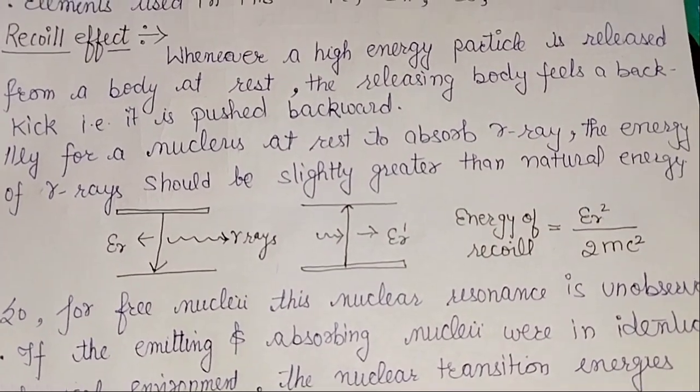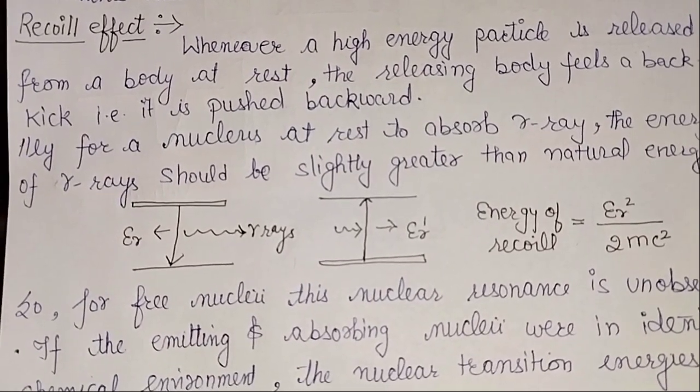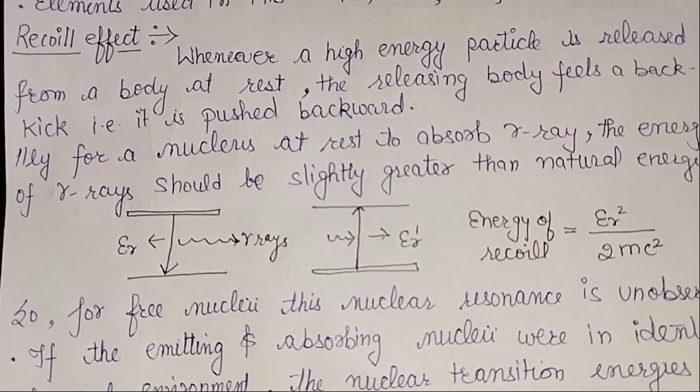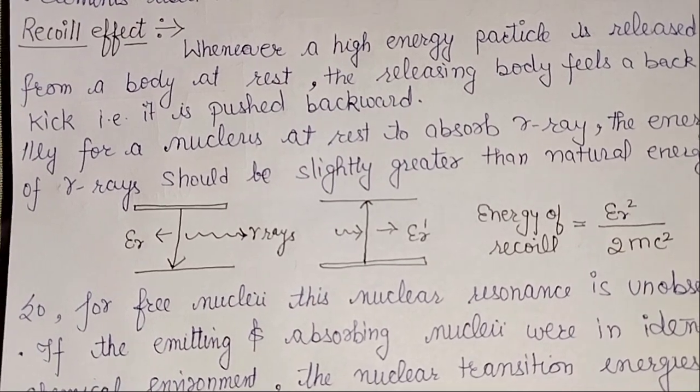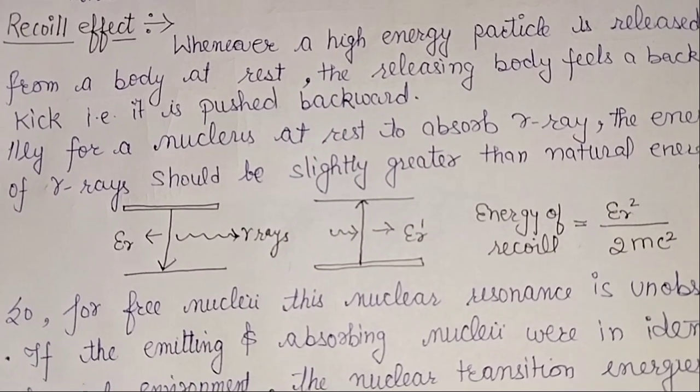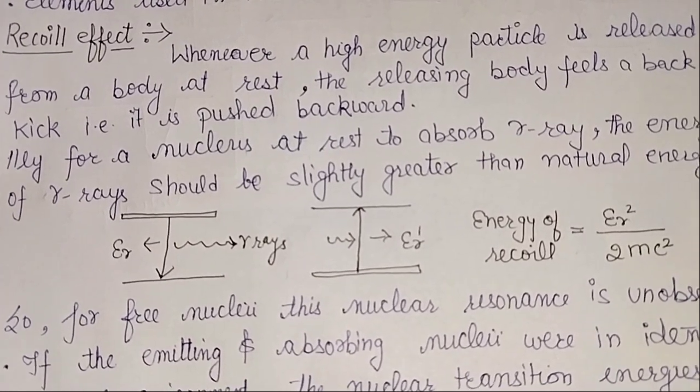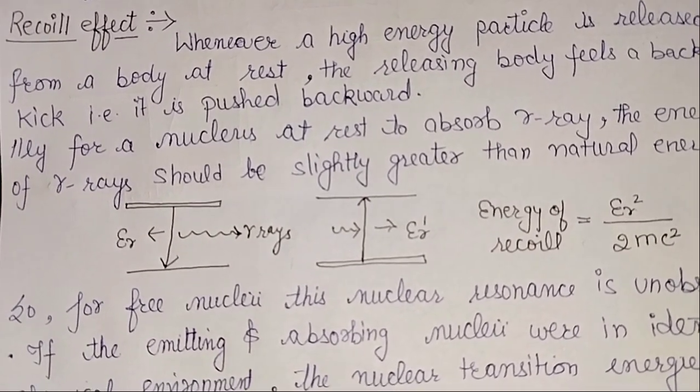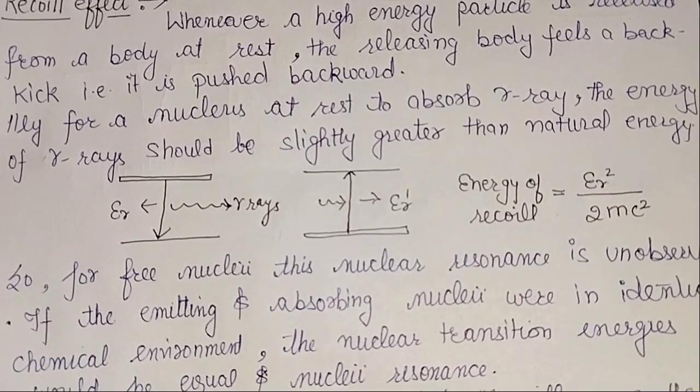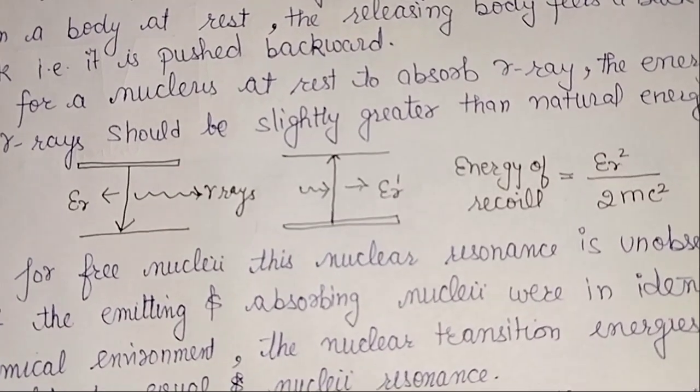For the principle, we have the recoil effect. What is the recoil effect? When a high energy particle is released from a body at rest, the releasing body feels a back kick, pushed backward. For example, when we use a gun and a high energy particle is released, there is a back kick. So the energy of gamma rays should be slightly greater than natural energy.